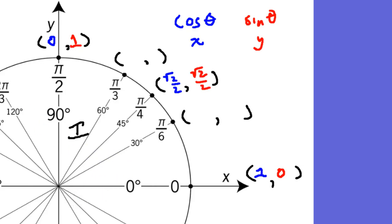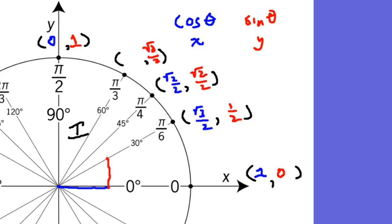At 30 degrees, the horizontal is longer than the vertical. Cosine of 30 degrees is root three over two, and sine of 30 degrees is one-half. At 60 degrees, the vertical is bigger: sine is root three over two and cosine is one-half. So if I ask cosine of 30 degrees, you look at the blue value — root three over two. If I say sine of pi over two, you go to pi over two; sine is in the red, it equals one.